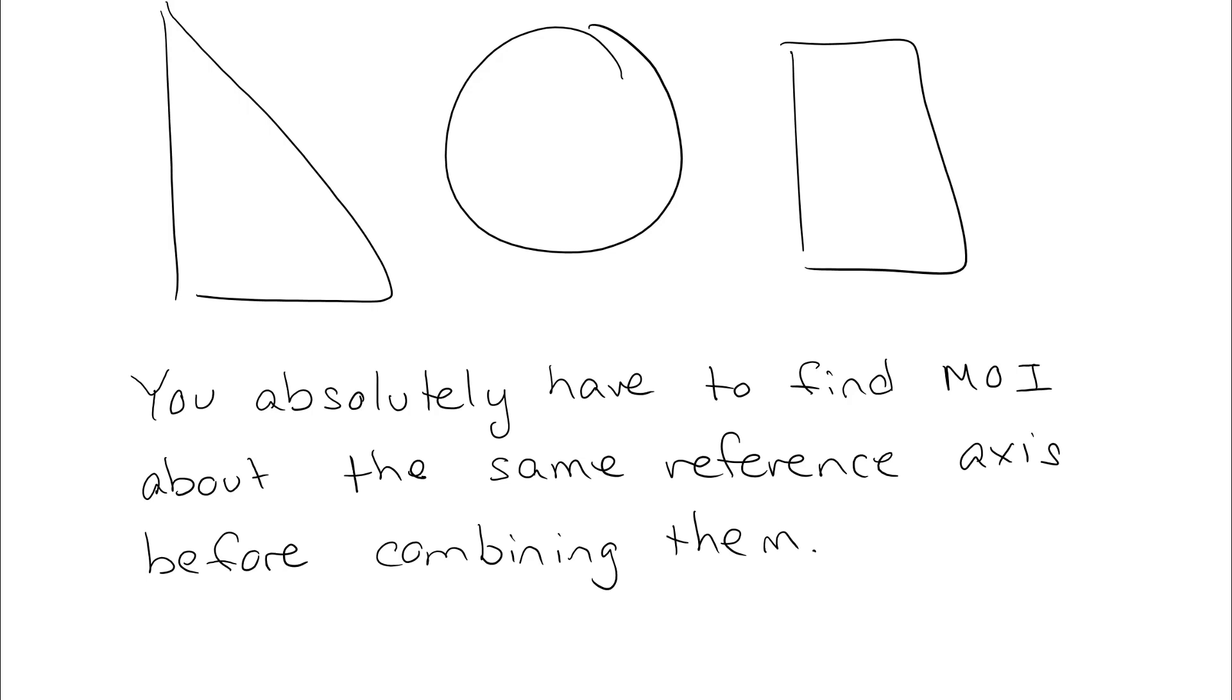Now, we talked about finding moments of inertia for area about different reference axes, and this is super important. You absolutely have to find the moment of inertia about the same reference axis before you combine them. That's pretty much the most common mistake that people make. If you had a picture that was like a triangle with a circle and a rectangle on it, and this one has an axis about this, and then this one would have a moment about this way, and then this one would be around there, and then you try to combine them, you can't.